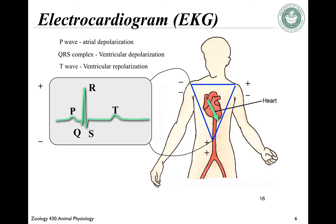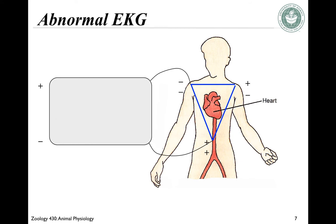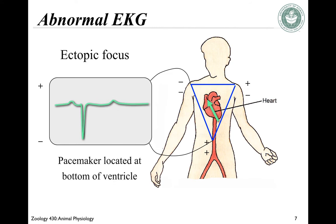Then there's the T wave, which signals ventricular repolarization. Sometimes we see an abnormal EKG; this is called an ectopic focus, and that's because the pacemaker is sometimes located at the bottom of the ventricle instead of its usual location.